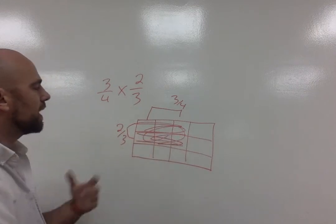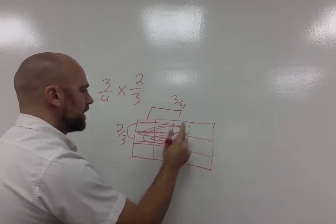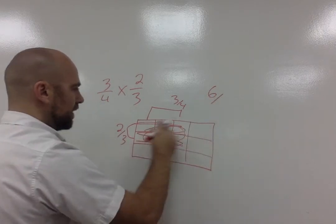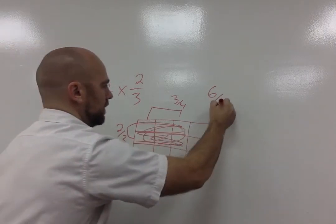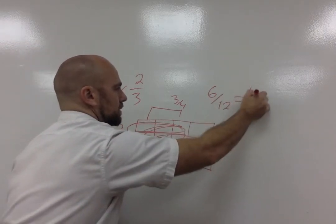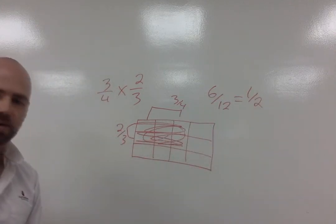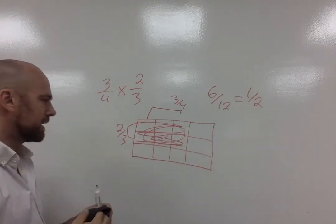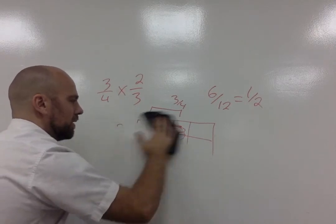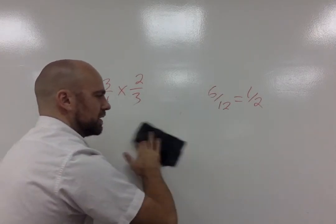So what do I end up getting? I end up getting one, two, three, four, five, six out of four, eight, twelve, which can be reduced to one half. I hope that kind of makes sense. I'll do a couple more. Feel free to pause the video and draw these yourselves.